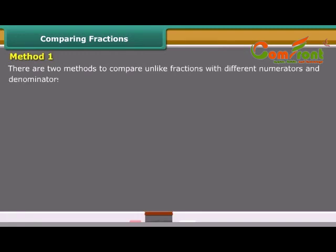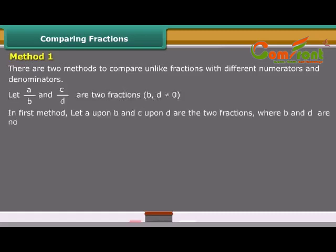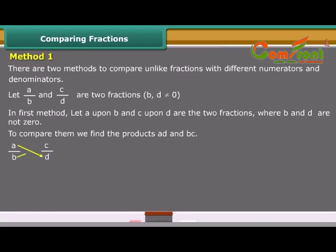There are two methods to compare unlike fractions with different numerators and denominators. In Method 1, let A upon B and C upon D be two fractions where B and D are not equal to 0. To compare them, we find the products AD and BC.